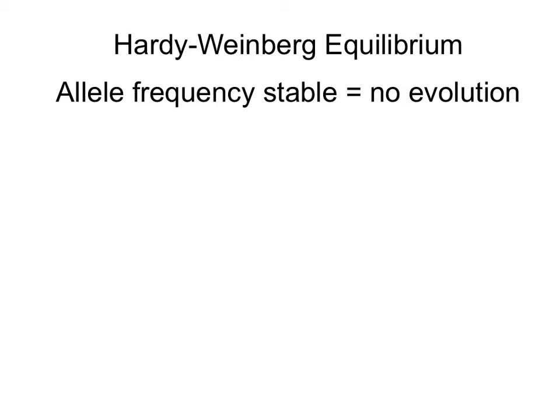On the other hand, a population that is in Hardy-Weinberg equilibrium is a population in which the allele frequency is stable — the same alleles are present in the same proportion generation after generation. So if evolution is a change in the genetic composition, a population in Hardy-Weinberg equilibrium will be a population that is not evolving. The same alleles are present in the same proportions generation after generation, and if there is no change in genetic composition, there will be no evolution in that population.